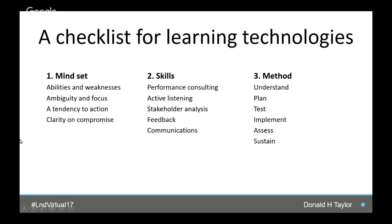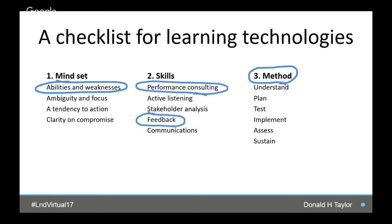On the mindset side, there are four things. Of all the things in a learning technology implementation, the mindset is the most important. The ambiguities-and-weakness element is the most important of the four. The checklist has a paragraph describing each in more detail with questions around it — it's completely free, you don't even have to register. Today, in the time we have, I'm going to concentrate on four parts: abilities and weakness, performance consulting, feedback, and finally the method — because if you don't have that, you're going to fail.